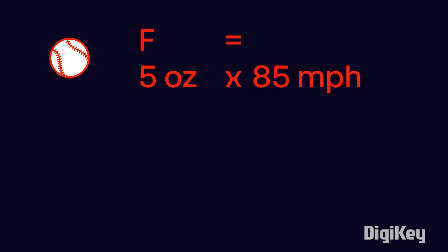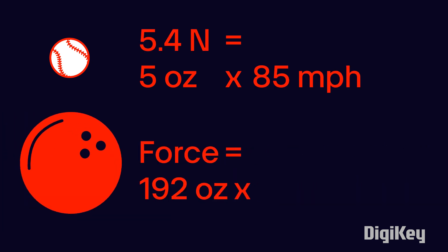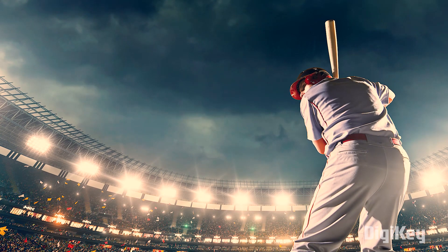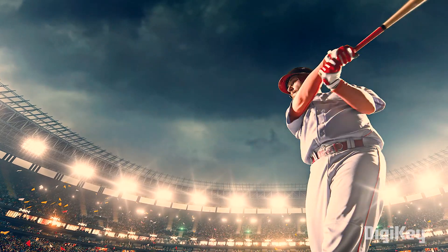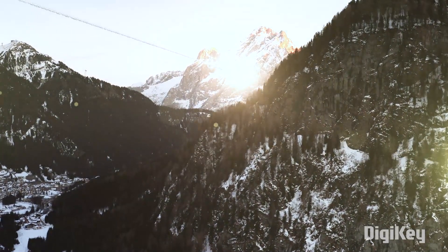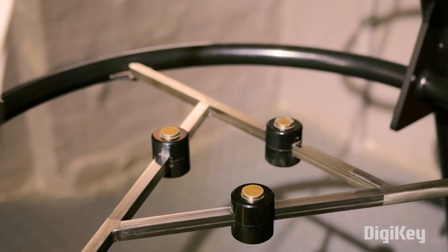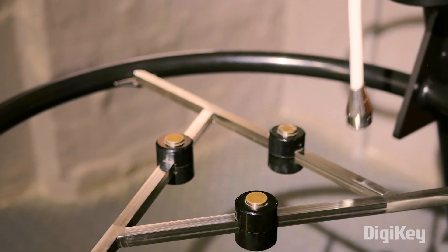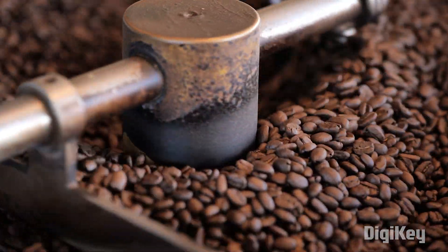The more mass an object has, the more force is required to cause acceleration. This is why it's hard to throw a bowling ball as fast as a baseball. Examples of force may include a ball coming into contact with a bat, meteor strikes, or magnets accelerating objects through attraction or repulsion. Any time the direction or velocity of a moving object changes, force is in play.